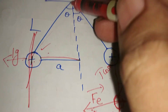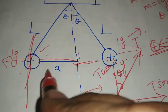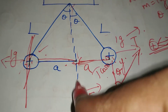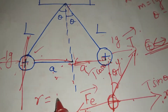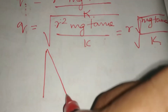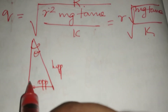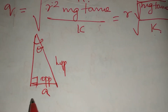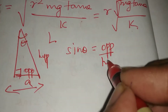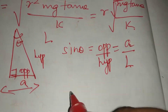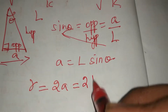Looking at the diagram, we calculate the distance r between the two charges using triangle geometry. Each string has length L and makes angle theta with the vertical. The horizontal distance from the center to one sphere is a = L sin theta. Since r = a + a = 2a, we have r = 2L sin theta.